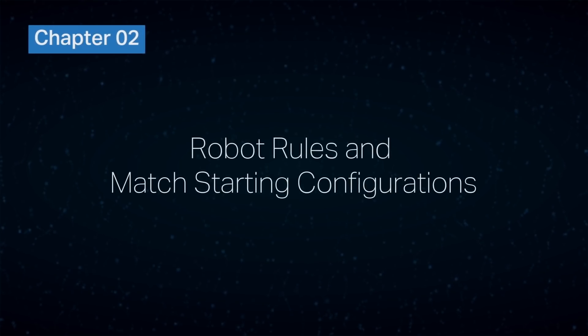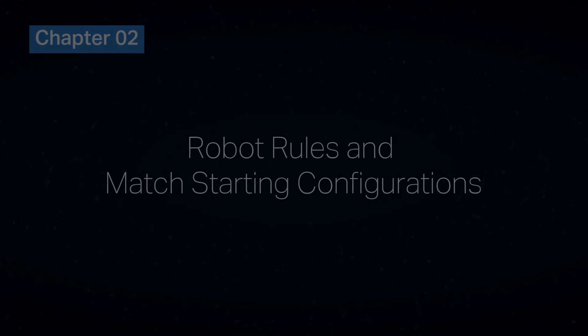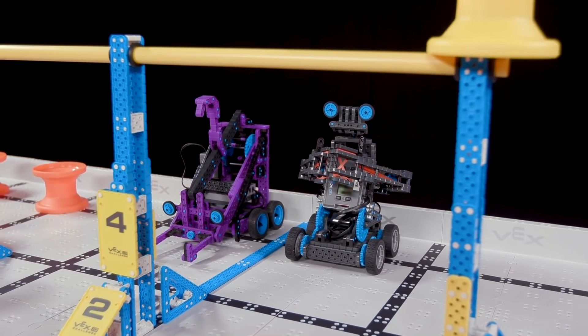Our second episode, Chapter 2, is about the robot rules and the proper match starting configuration for robots. We'll be discussing robot size, the starting position, legal parts, and non-functional decorations.